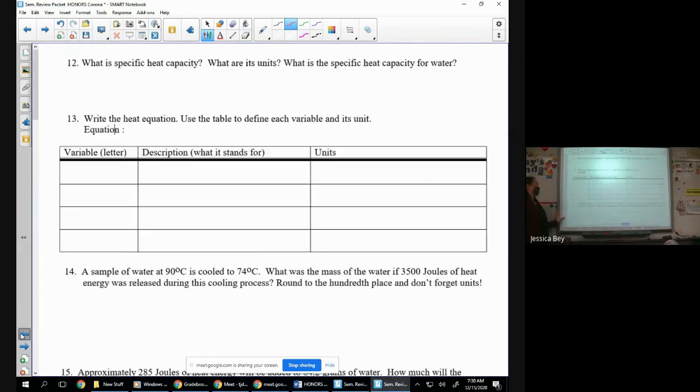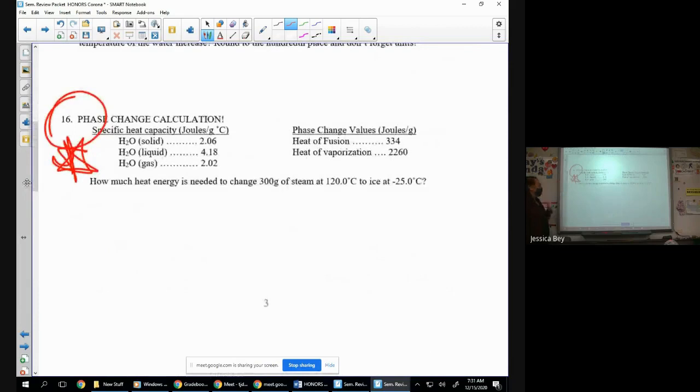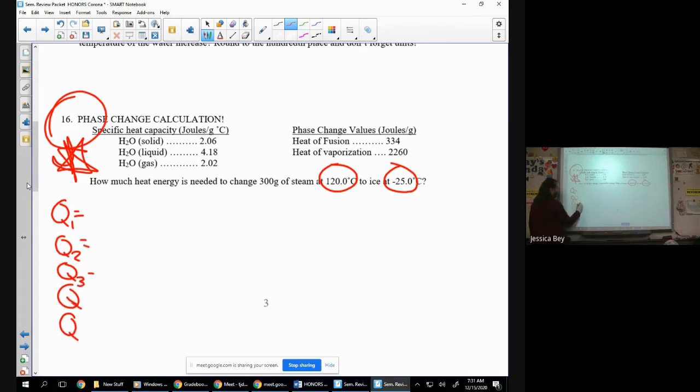So we're going to be steam at 120 and we'll be ice at negative 25. So to kind of jog your memory, if you're steam at 120, you can't condense there. So how do you get to where you condense? Then you got to cool, or you actually have to condense, then you have to cool your liquid, then you have to freeze. This is a five Q if you care. You will not have a five Q on the test.